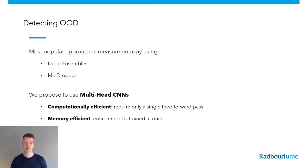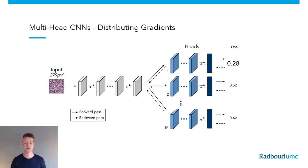Currently, there are two popular approaches for this task, which are based on measuring the entropy value of either MC dropout or deep ensembles. We, however, would like to propose to use multi-head CNNs, which are similar to the current state-of-the-art deep ensembles, but more efficient through extensive parameter sharing. This leads to a more computationally and memory efficient model.